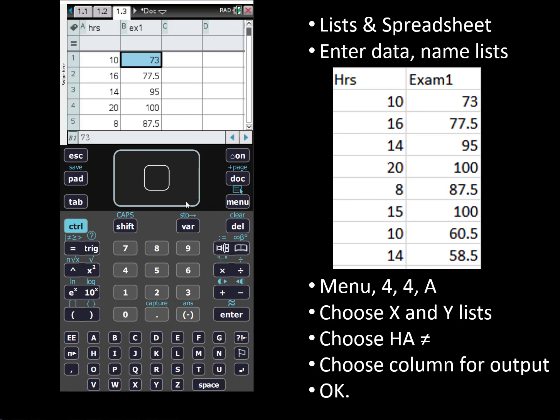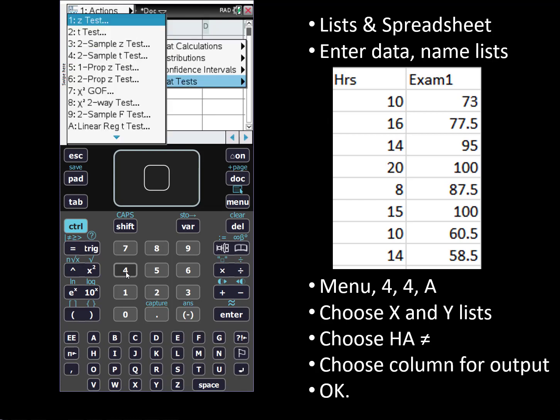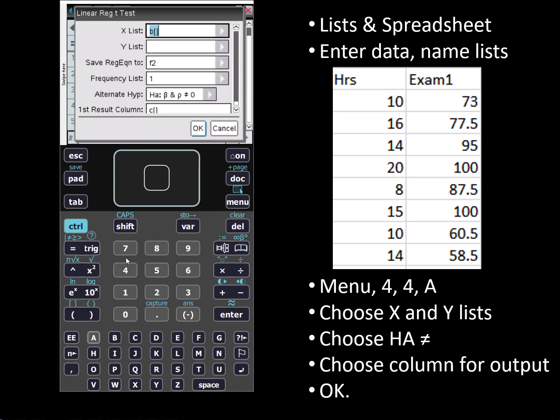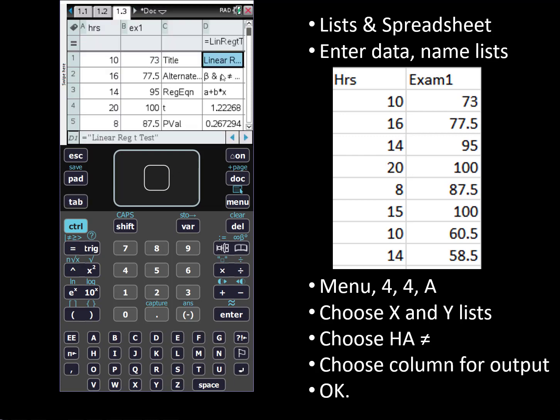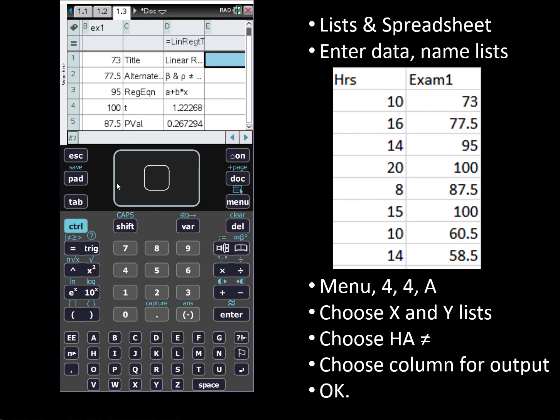Now the data is entered we click the menu button. We go into menu 4 for statistics, 4 for stat tests, and A for linear regression t-test. Right click in order to see the lists you've created and then tab down to the next one and select the list you created for your y variable. For the alternative hypothesis we have chosen to run this as a not equal test and finally we choose where we want the results to be output. You can accept the calculator suggestion. It usually will choose whatever is the next empty column. Click OK and now we have our results stored in columns C and D.